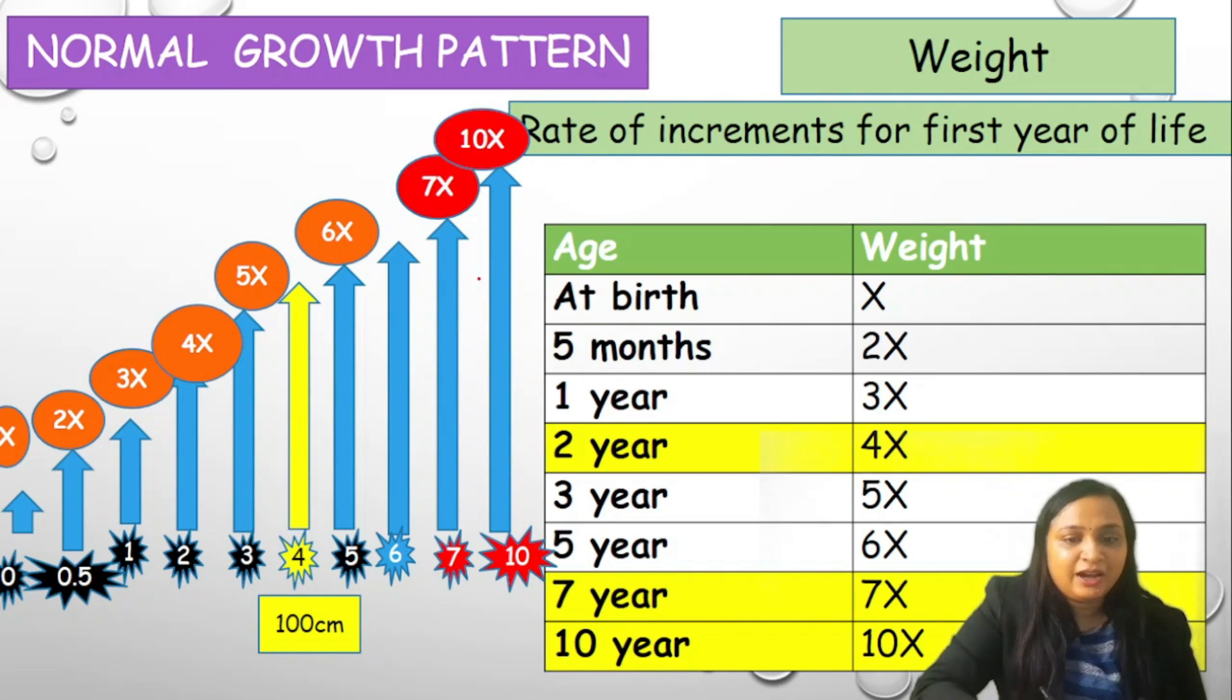The correct answer is 5 months. If you remember this chart, at birth it is 1x, at 5 to 6 months it is 2x, at 1 year it is 3x, at 2 years it is 4x, at 3 years it is 5x. I have told you that skip number 4, skip number 6.